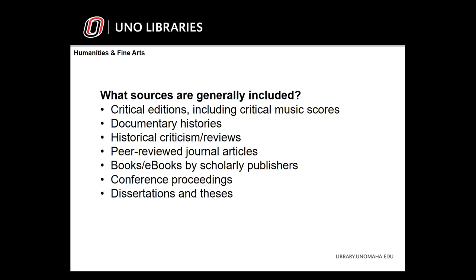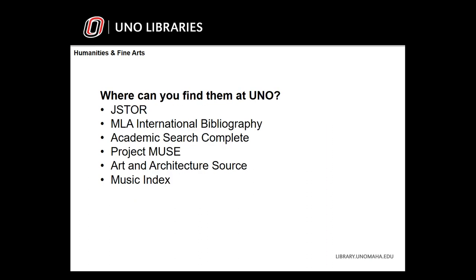Depending on your field, you'll use an array of primary and secondary source material. Critical editions of texts and scores will be helpful, as will documentary histories and historical criticism or reviews. You'll round out your review with peer-reviewed articles from journals, books or e-books, and unpublished gray literature or white papers like conference proceedings, along with dissertations and theses. The best databases will be specific to your field. JSTOR is extremely valuable for humanities and fine arts research. Other databases to search include MLA International Bibliography, Academic Search Complete, Project Muse, Art and Architecture Source, and Music Index.